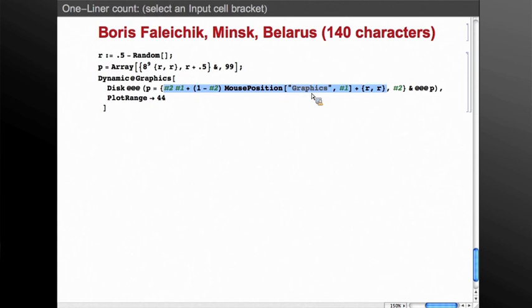And the way that works is, if we just look at the first part of this expression here, mouse position gives the position, the coordinates of the mouse within the graphic, and hash one is the current position of a disk. So this is just a linear combination of the current position and the mouse position. It's a weighted average. And so the effect of that, if you evaluate that recursively over and over again, is if the mouse position is not moving, the disk will slowly move toward the cursor position.